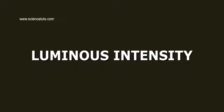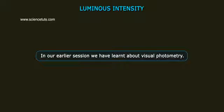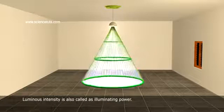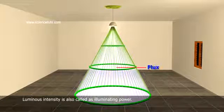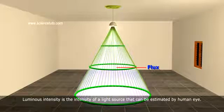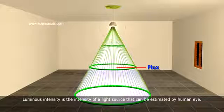In our earlier session, we learned about visual photometry. Now let us learn about an important term: luminous intensity. Luminous intensity is also called illuminating power and represents the intensity of a light source.